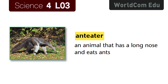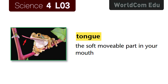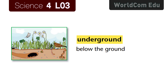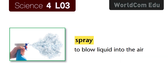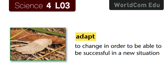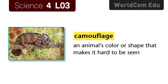Lesson 3: Animal Adaptations. Anteater — an animal that has a long nose and eats ants. Tongue — the soft, movable part in your mouth. Underground — below the ground. Spray — to blow liquid into the air. Adapt — to change in order to be successful in a new situation. Camouflage — an animal's color or shape that makes it hard to be seen.